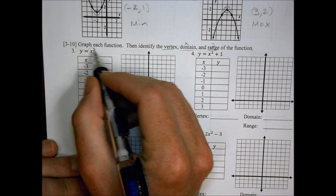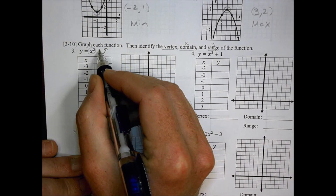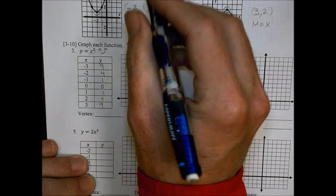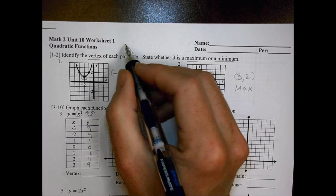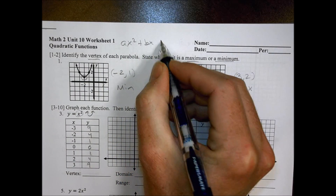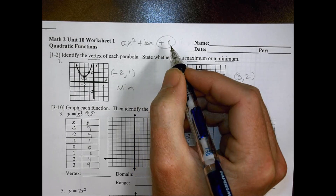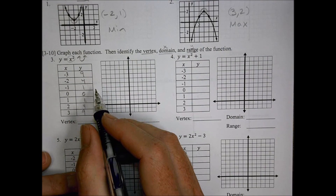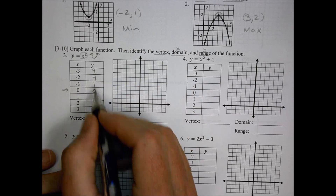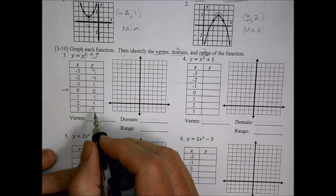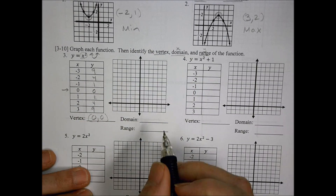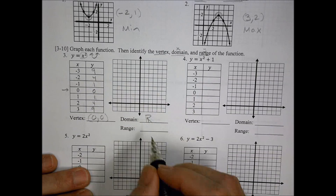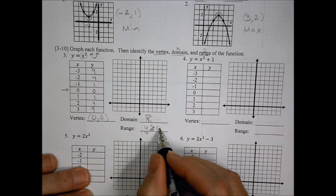Now this one — it's positive, so we're going to be curving up. For the vertex, there's no c value. In standard form, it's ax squared plus bx plus c. This c value often indicates where the vertex is going to be. In this case, there is no c value, so our vertex is going to be located right where it makes the dip or comes back up — it'll be at zero comma zero.